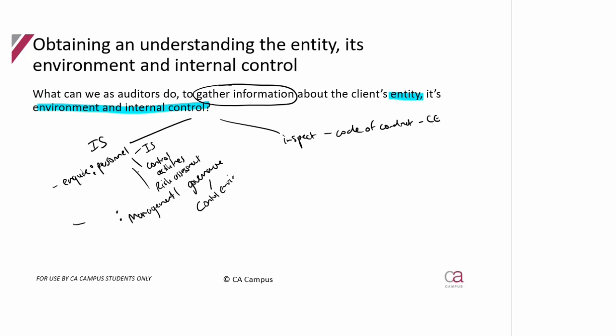So that's a lot of asking and looking for internal control information. What else could we do for internal control? We could inquire with internal audit, if they have one. Because if they've got internal audit, internal audit's job is really to make sure that the controls within the business are working. So ask internal audit.